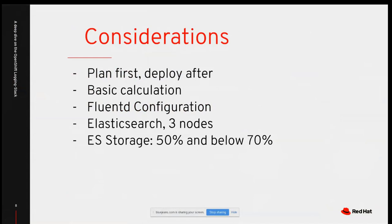For a high-availability setup, run Elasticsearch on at least three OpenShift nodes. For storage, monitor your index consumption carefully — keep storage usage between 50% and 70%. Exceeding this threshold can cause complications and prevent you from consuming logs in Kibana.